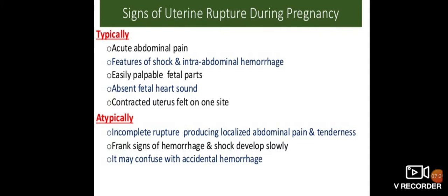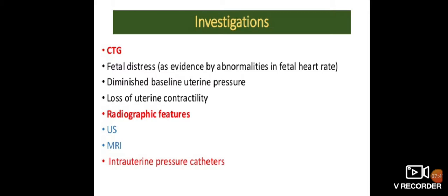Incomplete uterine rupture typically produces localized abdominal pain and tenderness, with frank signs of hemorrhage and shock developing slowly — which may be confused with accidental hemorrhage. Investigations include CTG to monitor fetal heart rate, checking for diminished baseline uterine pressure and loss of uterine contractility, radiographic examination, ultrasonography, MRI, and intra-uterine pressure monitoring.